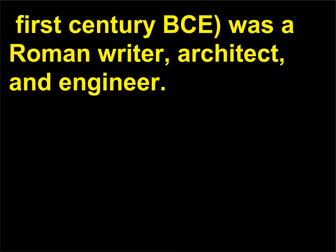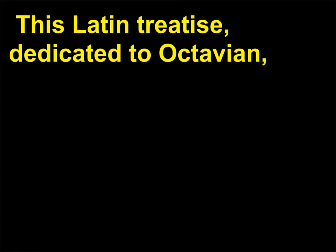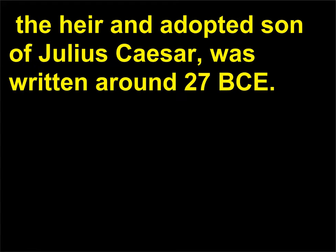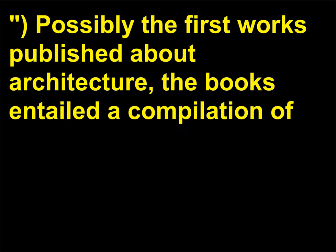Who was Vitruvius? Marcus Vitruvius Pollio, c. 1st century BCE, was a Roman writer, architect, and engineer. He was the author of De Architectura Libri Decem, known today as the Ten Books of Architecture. This Latin treatise, dedicated to Octavian — the heir and adopted son of Julius Caesar — was written around 27 BCE. Possibly the first works published about architecture, the books entailed a compilation of architectural ideas of Vitruvius's day.